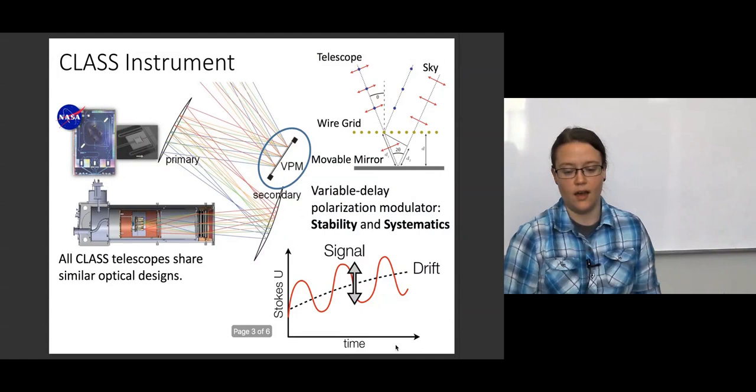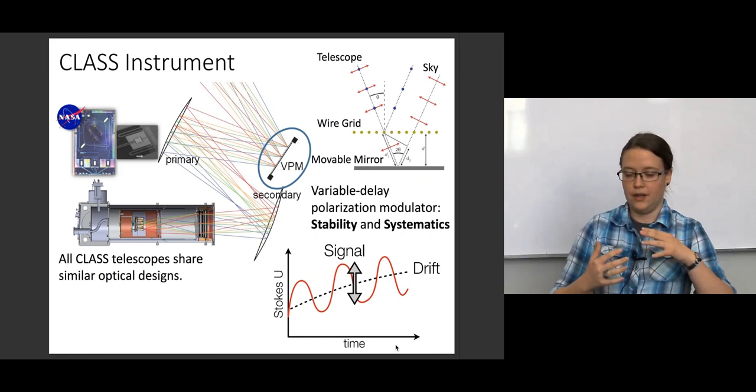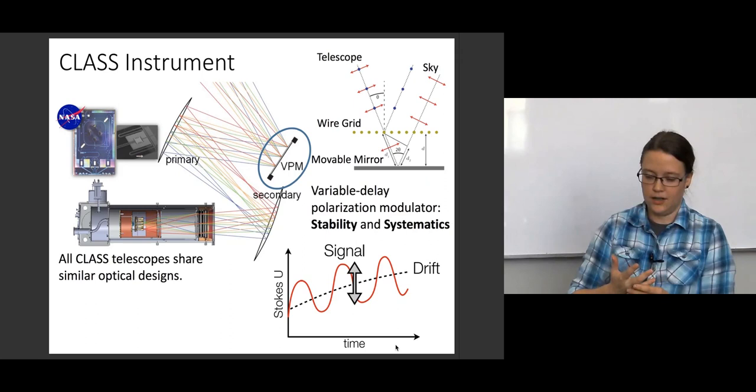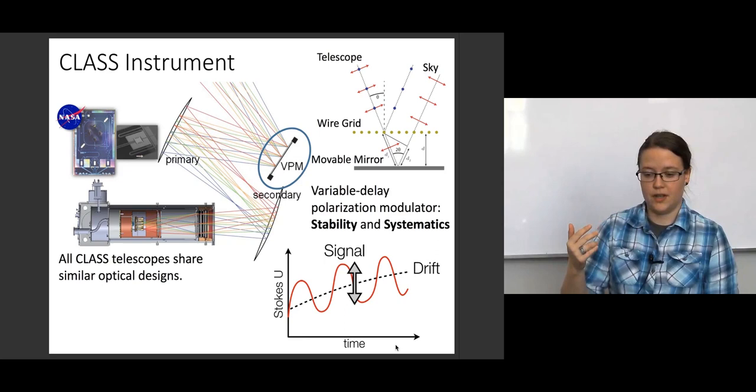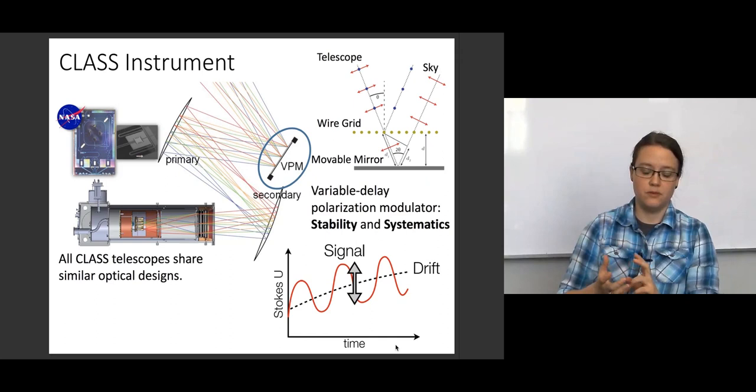And the variable delay polarization modulators, or the VPMs, are an instrument we are going to use to help us make this measurement. So a VPM is a wire grid in front of a movable mirror. You can see it up in the corner of the screen right there. And the idea here is that electric fields that are parallel to the wires bounce off the wires, and electric fields that are perpendicular to the wires go through, get an extra phase delay as they hit the mirror, and then come back out and recombine with the other polarization state.